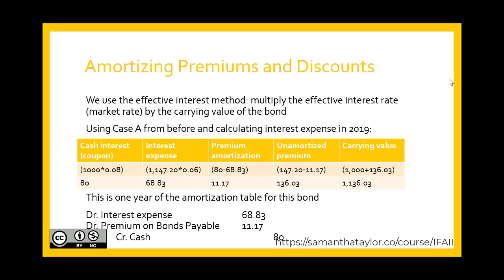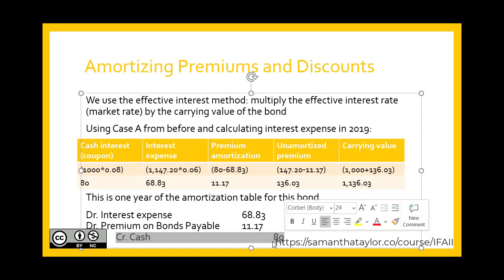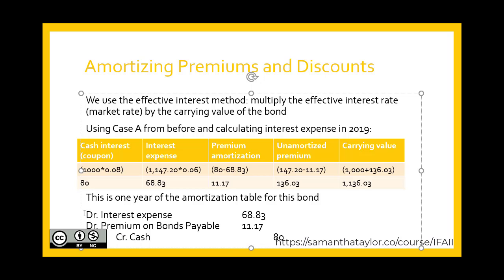Looking at case number one, where the bond was issued at a premium because the nominal rate was higher than the market rate: first we look at cash — cash is cash. We take the base value and multiply it by the nominal rate; this is the cash paid to the purchaser of the bond. Then we calculate our interest expense by multiplying our current liability — the net recorded amount — by our market rate. So the 6% market rate times $1,147.20 of our liability gives us our interest expense.